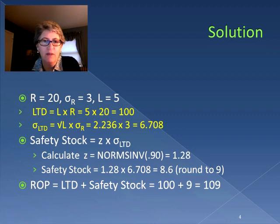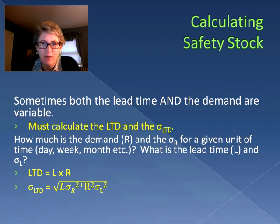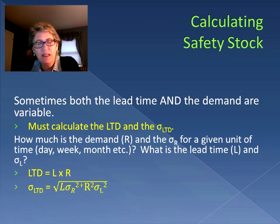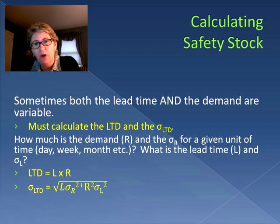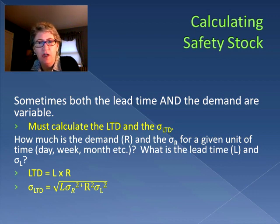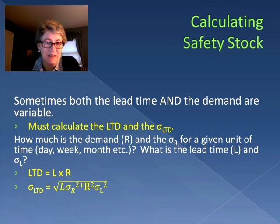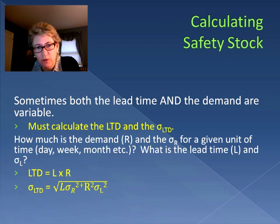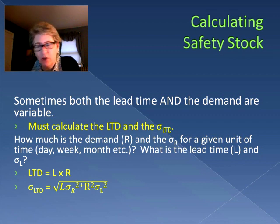Sometimes the lead time is also variable, not just the demand, and we still have to calculate the lead time demand and its standard deviation. We're typically given a value for demand (d) and standard deviation of demand, as well as a lead time (L) and standard deviation of lead time. Using all four values, lead time demand is still just lead time times demand, but the standard deviation of lead time demand uses a much more complex formula. Be careful to take the square root of the whole equation and ensure your parentheses are in the correct place.